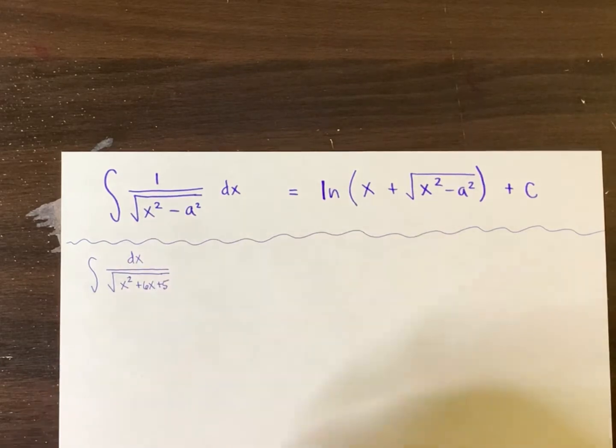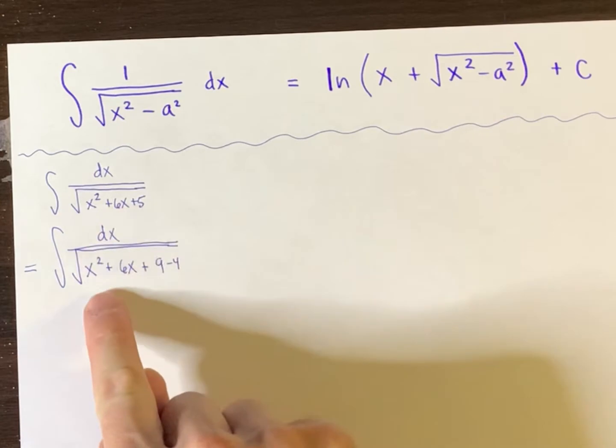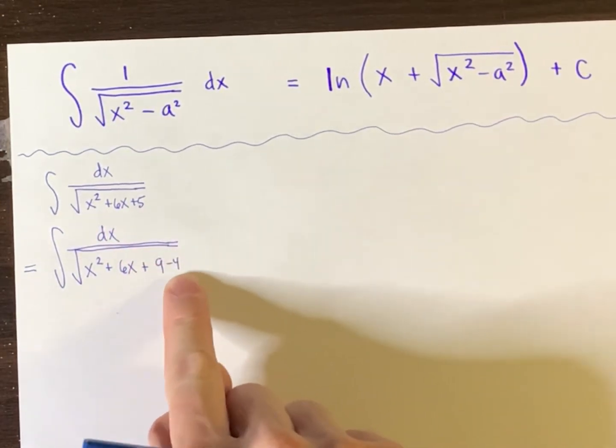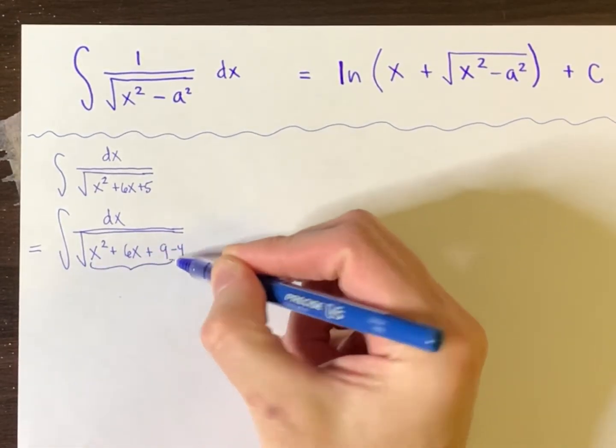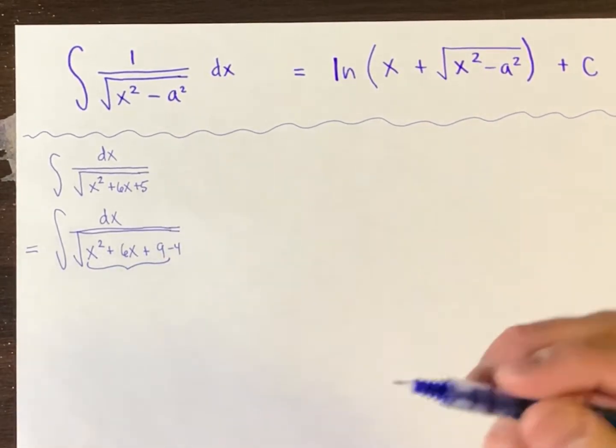And so we shall. So here's what I would do first. I kept everything the same. And instead of five, I wrote down five, but in a different way. And the reason I did that is because this here is the square of a binomial, namely this one here.